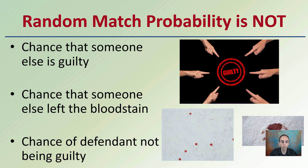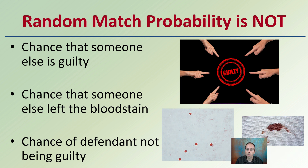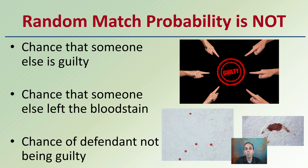The random match probability is not a chance that someone else is guilty — it is only one piece of information. It is also not a chance that someone else left the blood stain, and it is not a chance of the defendant not being guilty. A lot of people think all you need to do is find DNA, match it to a potential suspect, and they'll be deemed guilty. There is a lot more that goes into it. You need supporting evidence to link that suspect to the crime scene — not only to establish physical presence, but to establish physical presence at the time of the crime.